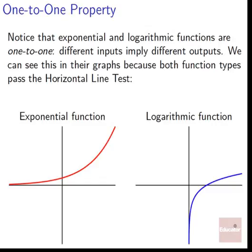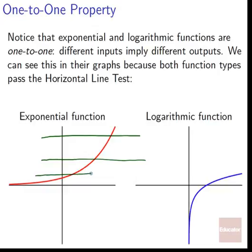Notice that exponential and logarithmic functions are both one-to-one. Different inputs imply different outputs. We can see this in the graphs because both function types pass the horizontal line test. If we cut an exponential function's graph with a horizontal line, it's only going to intersect at a maximum of one point — this means it is a one-to-one function. Same with logarithmic functions; it will only intersect one time. For any input there's only one output, and for every output there is a unique input that creates it.